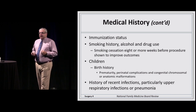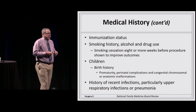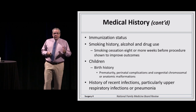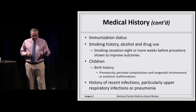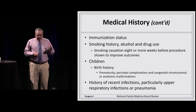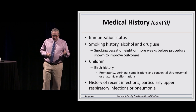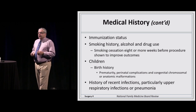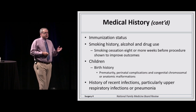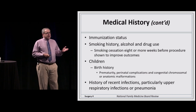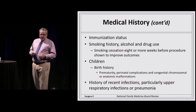Some specific preoperative points for children: we want to make sure we talk about birth history, anything associated with prematurity, congenital anomalies, and any perinatal complications that may affect an operative procedure. We also talk about recent infections, especially related to the lungs — pulmonary infections in the recent past will increase the patient's risk of developing pulmonary complications post-operatively.